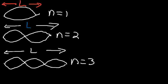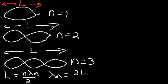L is equal to n times the wavelength divided by 2. If you rearrange the equation to solve for the wavelength, it's going to be 2 times L divided by n. Now all of these standing waves occur at the natural frequencies or resonant frequencies of the string. If you use a different material, that can affect the standing waves that are produced. Now let's talk about frequency.